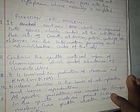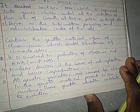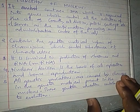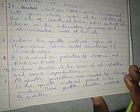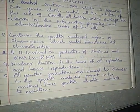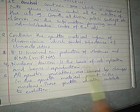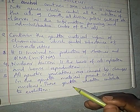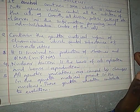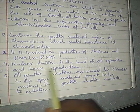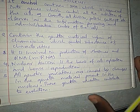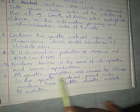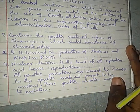The functions of the nucleus include: it contains DNA organized into genes which control all activities of the cell; it contains genetic material in the form of chromosomes which control inheritance of characteristics from parent to offspring; it is involved in the production of ribosomes and RNA such as messenger RNA and ribosomal RNA; nuclear division is the basis for cell reproduction; and all genetic variations are caused by changes in the genetic material present in the nucleus, which contribute to evolution.